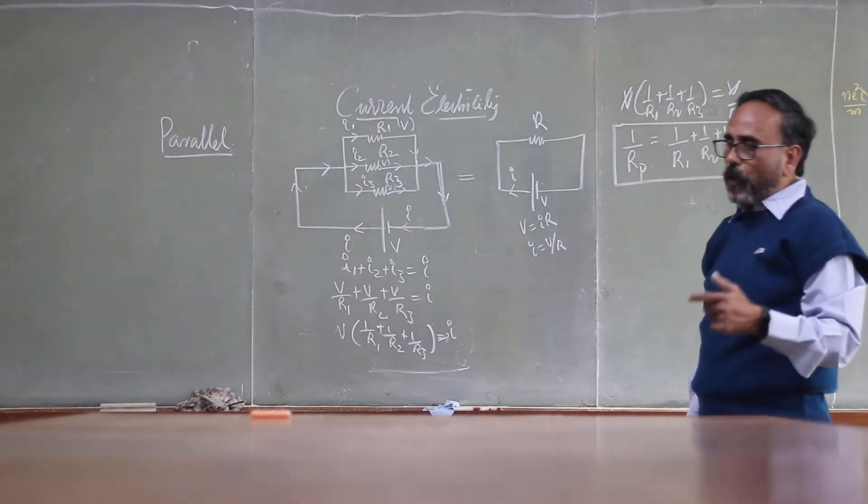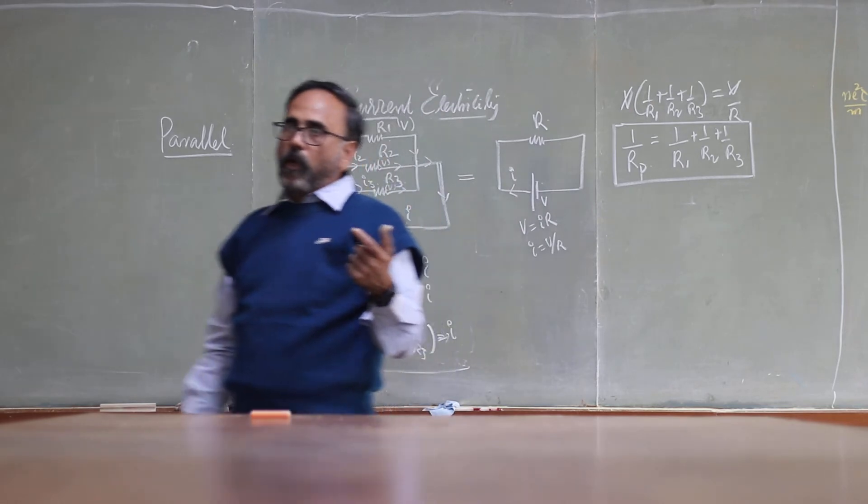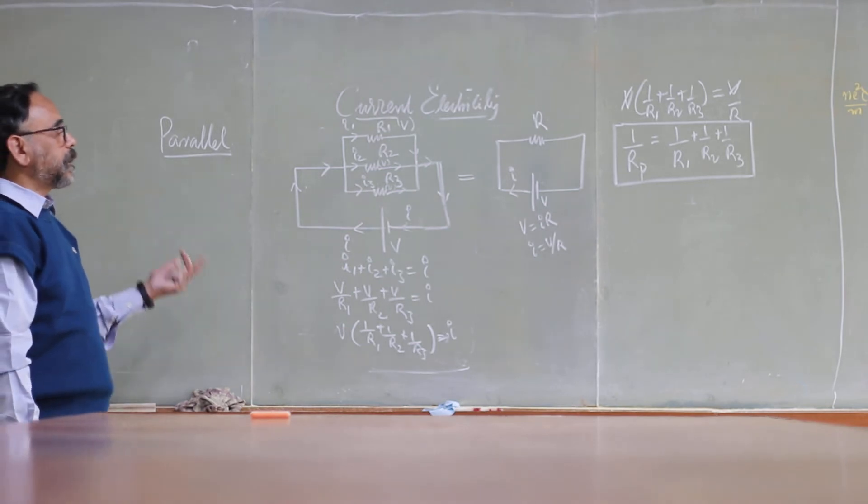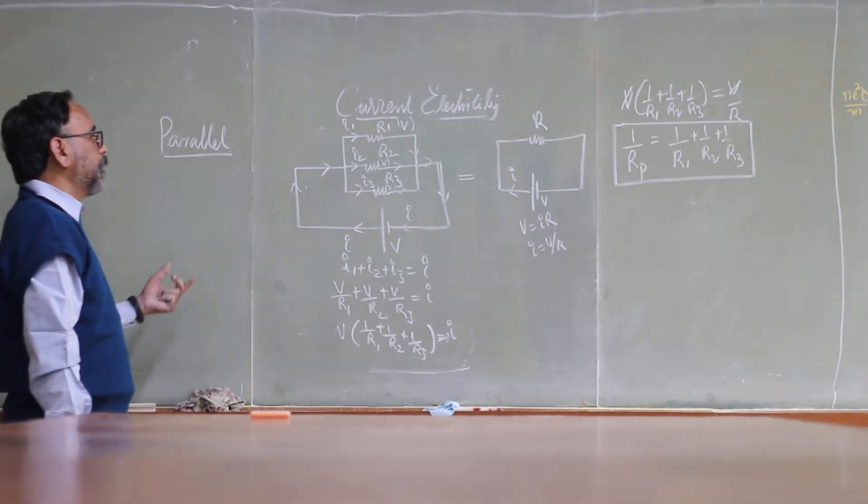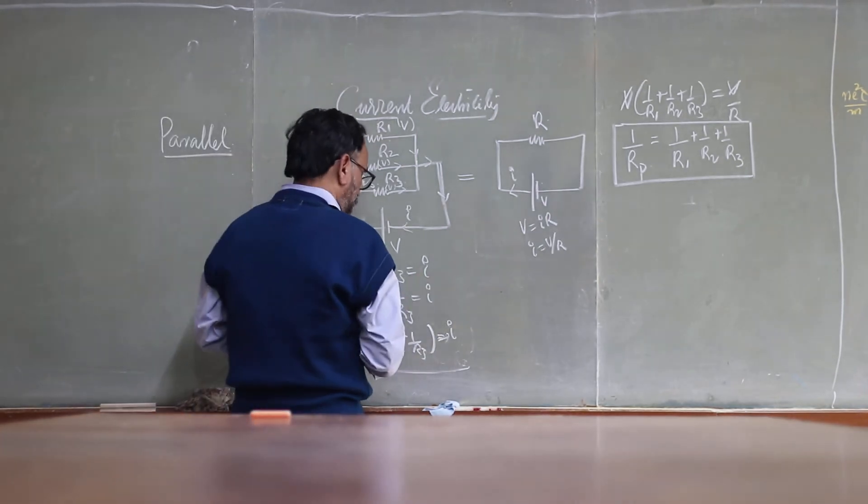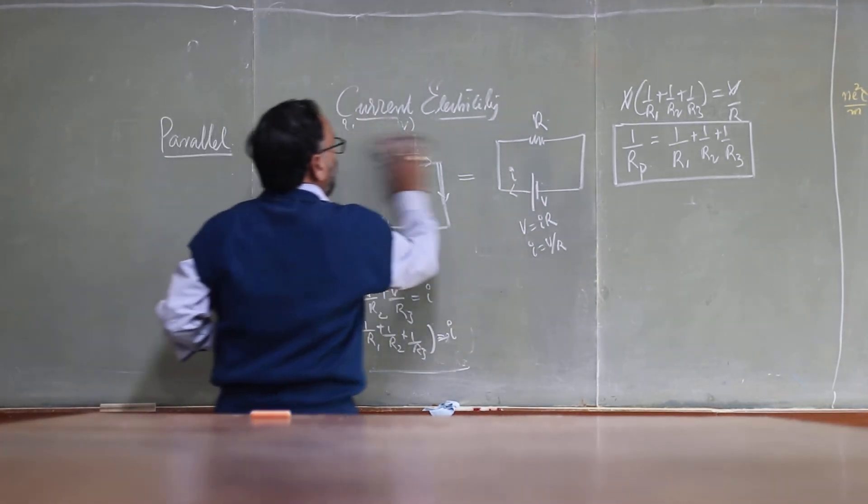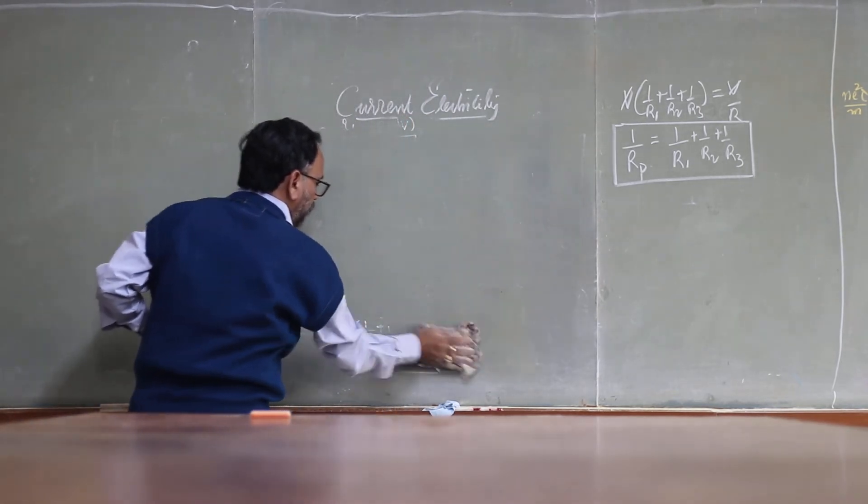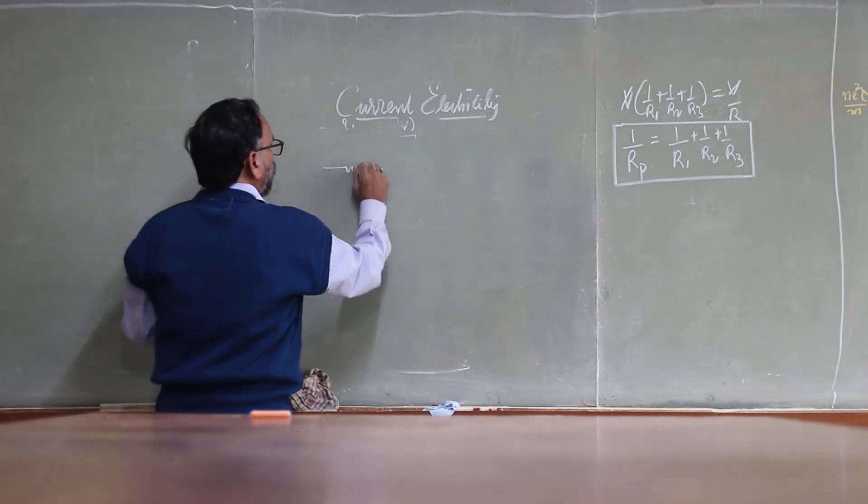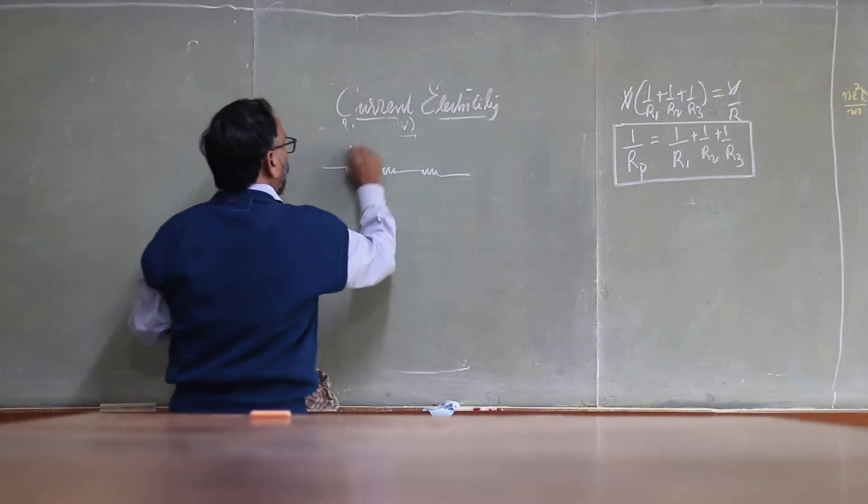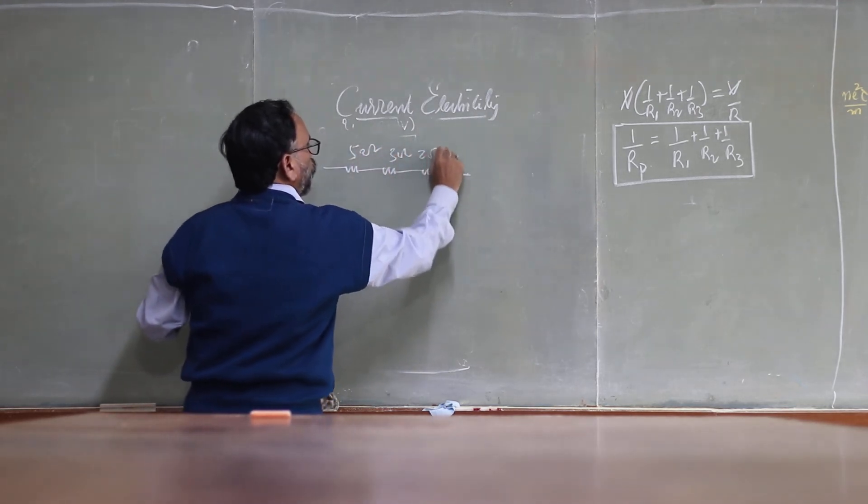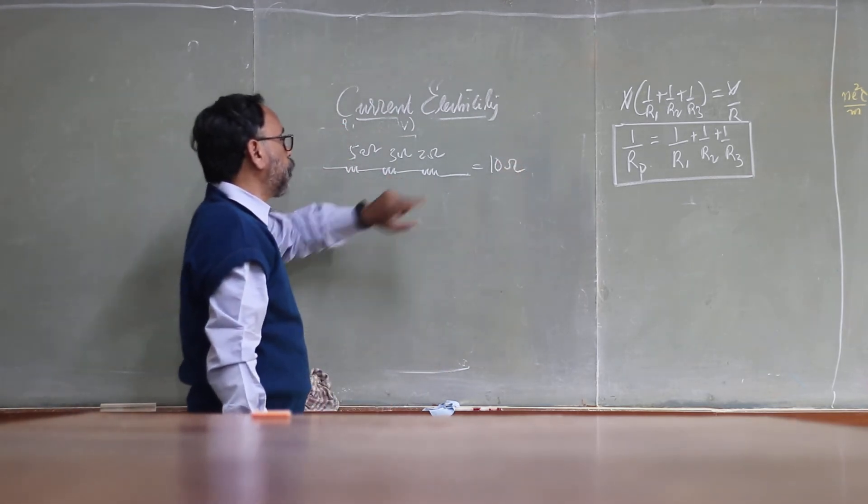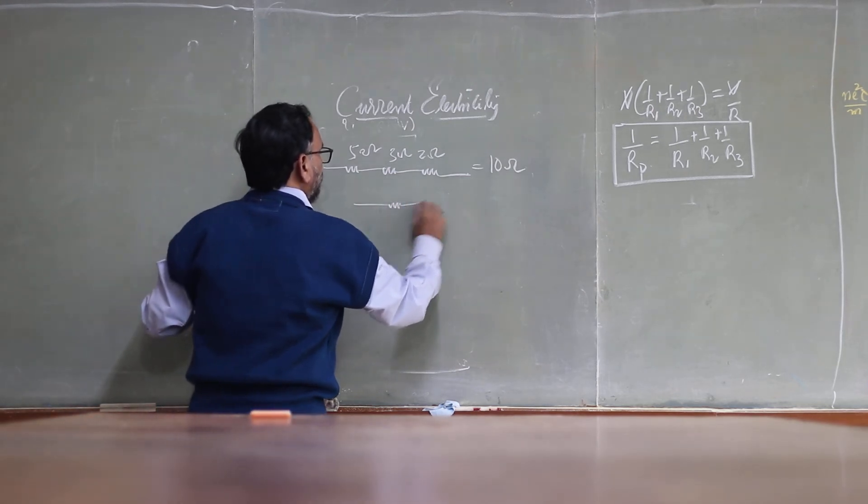Remember, resistance controls the current. If you want to increase the resistance, the resistors are to be connected in series. If you want to decrease the resistance, the resistors are to be connected in parallel. Here if you connect suppose three resistors: 5, 3, and 2 ohms. If you connect them in series, the resultant resistance will be 10 ohms, which is more than 5, more than 3, more than 2. But if these three are connected in parallel...